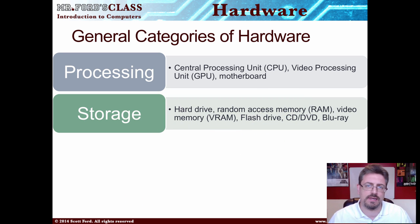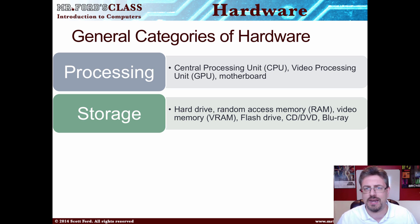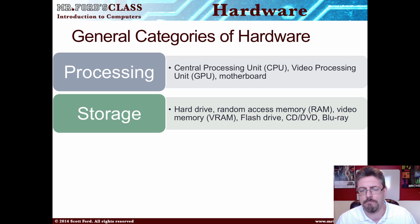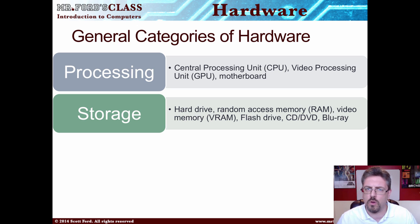The next category would be storage — this is stuff that holds information. Things within this category could be your hard drive, your random access memory otherwise known as RAM, your video memory, flash drives, CDs, DVDs, Blu-rays. Those hold content and information.